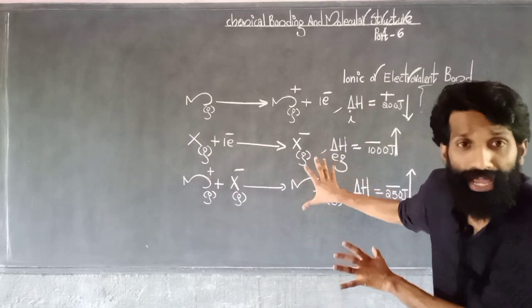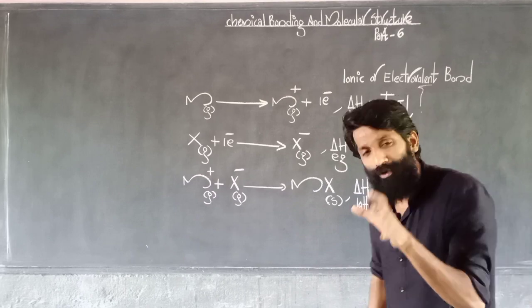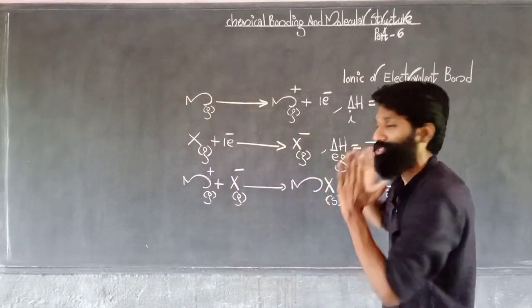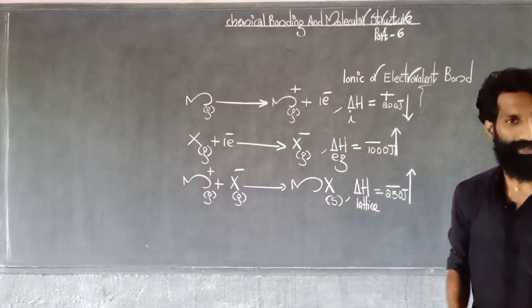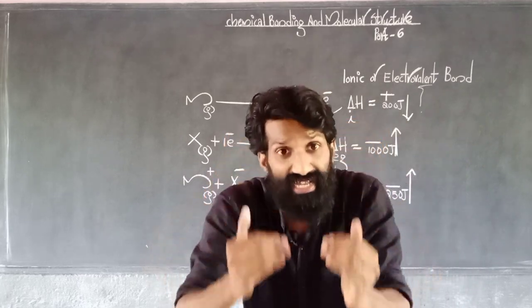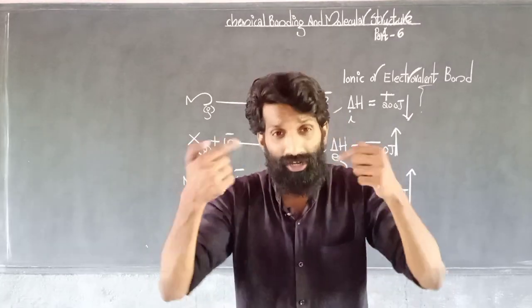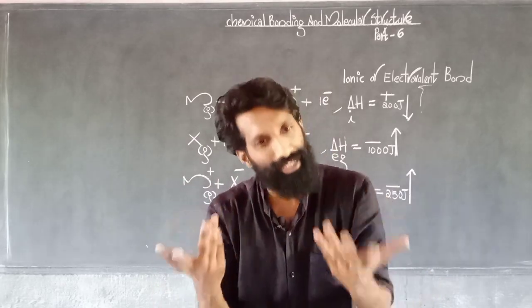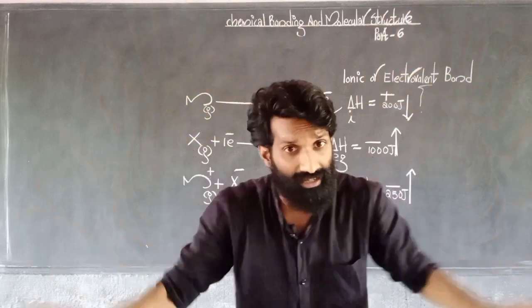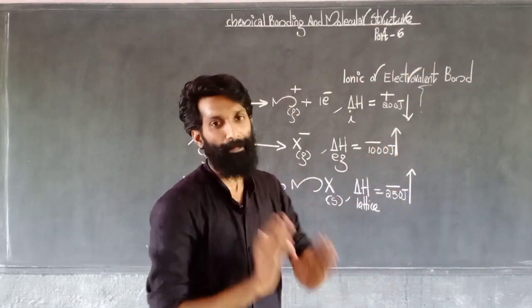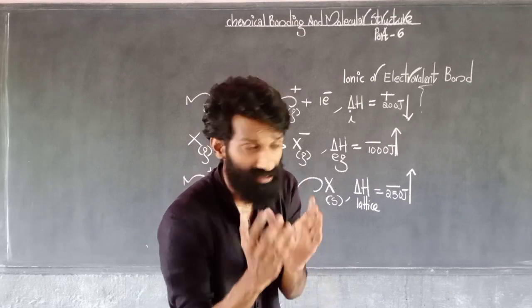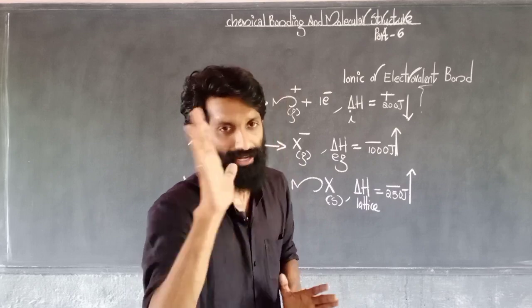It will be stable. Then the ionic bond will be formed. It will be completed by the octet. Ionic bond is formed to release energy, by which the atoms get stability.